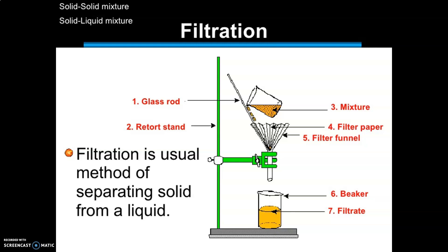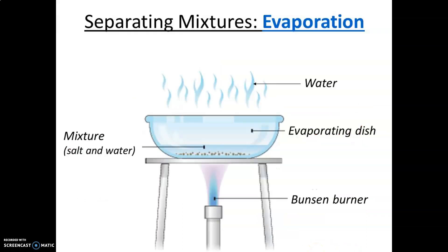You will get a pure liquid called the filtrate in the beaker. The chalk left behind in the filter is known as the residue, and the clear liquid collected at the bottom is your filtrate. Mixtures like chalk and water, clay and water, tea and tea leaves, and sawdust and water can be separated by filtration.